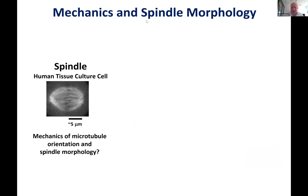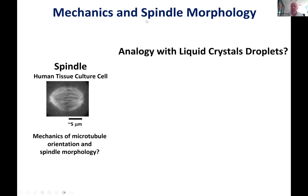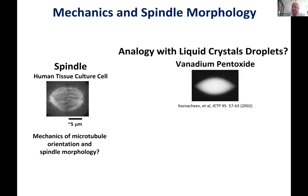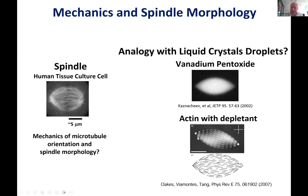We wanted to make an analogy with liquid crystal droplets. If you take rod-like molecules and mix them up, they spontaneously form shapes reminiscent of the spindle — true for inorganic rod-like molecules and also for actin filaments mixed with PEG. The basic idea is that surface tension, because molecules want to bind each other, wants to make a round droplet, while filament alignment wants to extend it. The balance between these produces a spindle-like shape.